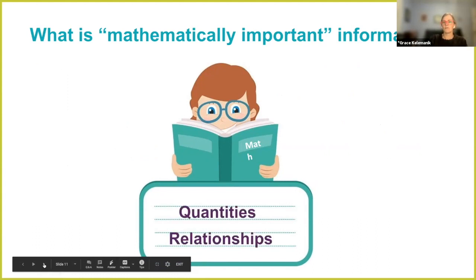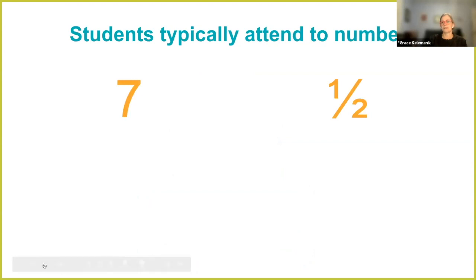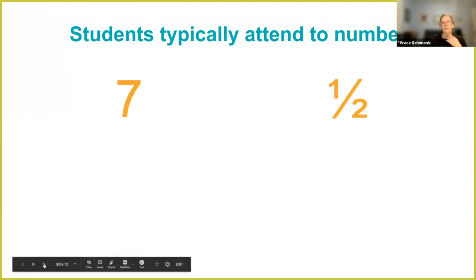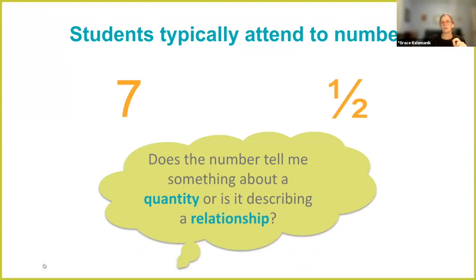For mathematicians, those are often quantities and relationships. But here's the problem: kids generally don't pay attention to quantities and relationships when they read a word problem. They almost always just pay attention to the numbers. That's not bad, as long as, as soon as they see a number, they ask themselves: is this number telling me something about a quantity, or is it describing a relationship?